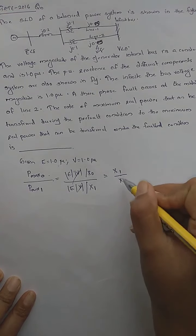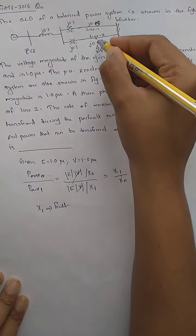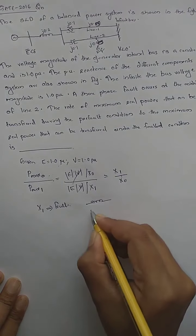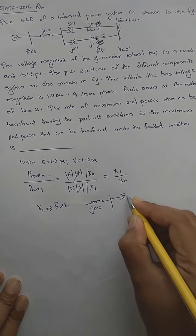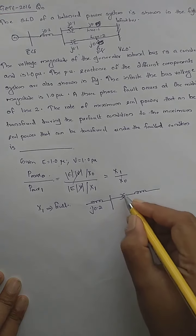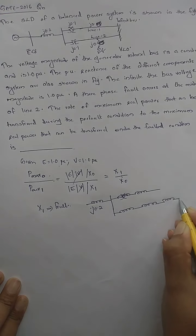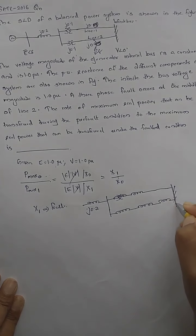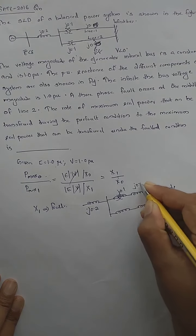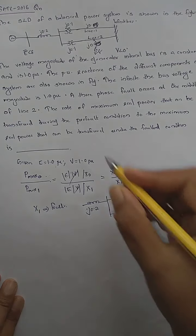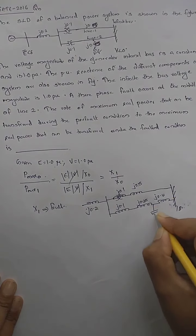X1 is the reactance under the faulted condition. Drawing the faulted circuit: J0.2 for the generator reactance, then J0.1 and J0.5 for one path, J0.1 for the transformer on the other, and the fault occurs at the midpoint of line 2, splitting it into J0.25 and J0.25. There is an earth connection at the fault point.